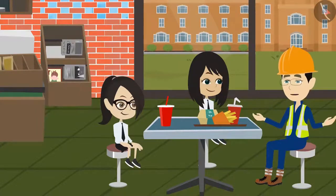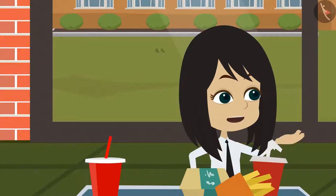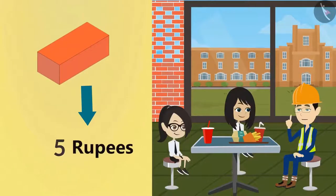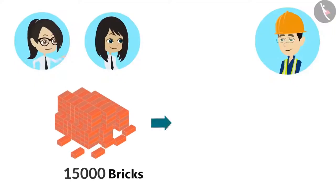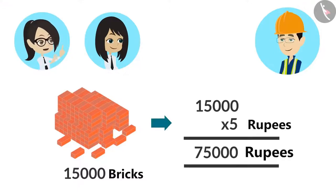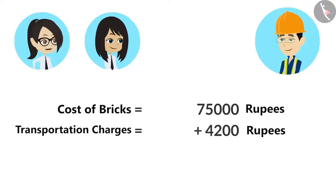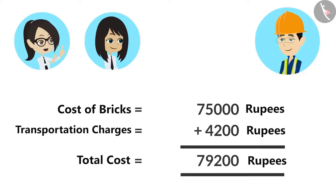So tell me, how much did the bricks cost for the construction of this entire canteen? Sir, you have not told us the cost of one brick. If you tell us that, we will be able to calculate the total cost. The cost of one brick is Rs. 5. If one brick costs Rs. 5, then 15,000 bricks will cost 15,000 multiplied by 5, which is Rs. 75,000. Total cost of bricks is Rs. 75,000 and the transportation charges are Rs. 4,200. Therefore, the total cost is Rs. 79,200.